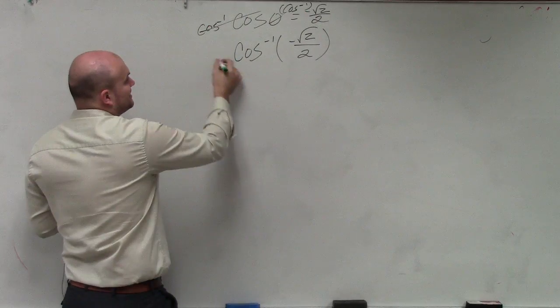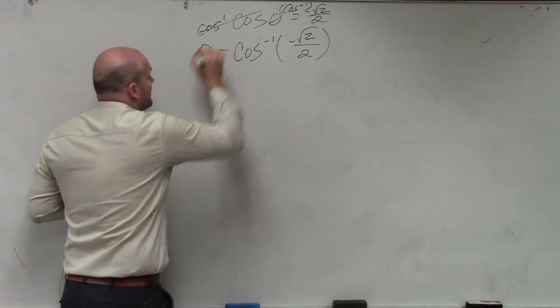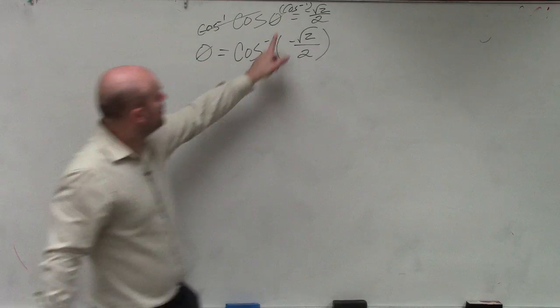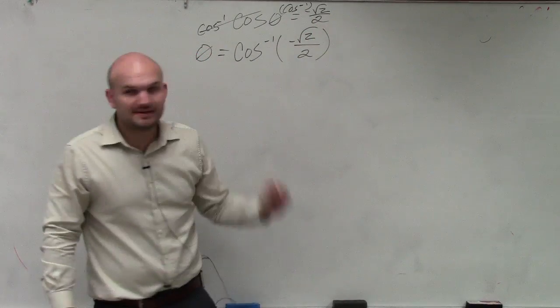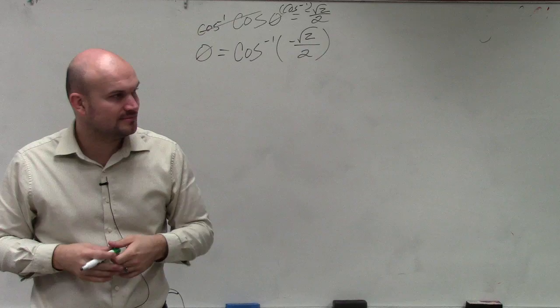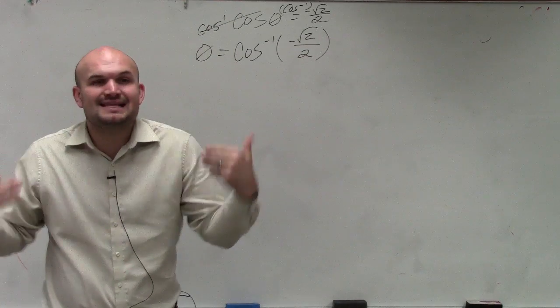So basically, this tells us θ equals the cosine inverse of negative square root of 2 over 2. That's basically what we're asking. What is the angle?